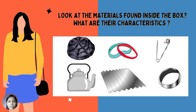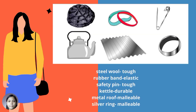Look at the materials found inside the box. What are their characteristics? When choosing materials for specific use, don't forget to consider their characteristics and their properties. The steel wool is tough, rubber band is elastic, safety pin is tough, kettle is durable, metal roof is malleable, and silver ring is also malleable.